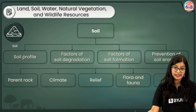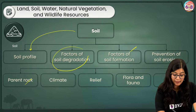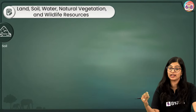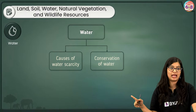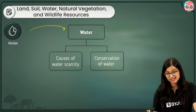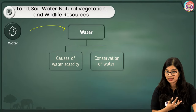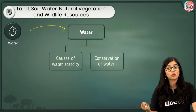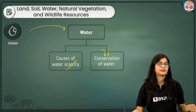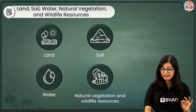We learnt about soil — the nature of soil, soil profile, and factors that result in soil formation like parent rock, climate, relief, flora, fauna, and time. Then we learnt about soil degradation and how we can prevent soil erosion. Next, water: water is the elixir of life, a very important renewable resource, but over time there is very little fresh water available, and because we've been exploiting and degrading the quality of water it has resulted in water scarcity.